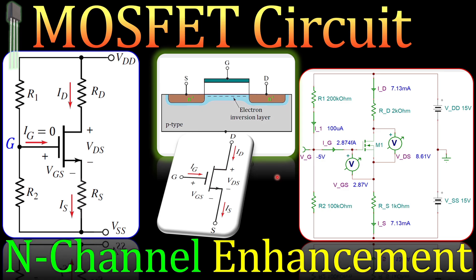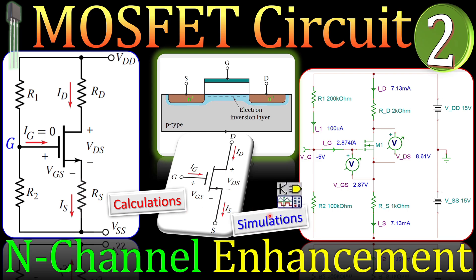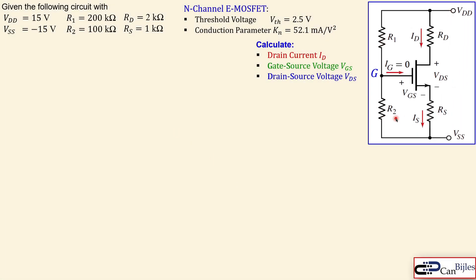Greetings and welcome to a new video about a MOSFET circuit — this is our second example. In this example we will look at a circuit with two DC sources and four resistors. For the N-channel enhancement MOSFET we have the following parameters: a threshold voltage of 2.5 volts and a conduction parameter kn of 52.1 milliamps per square volt.